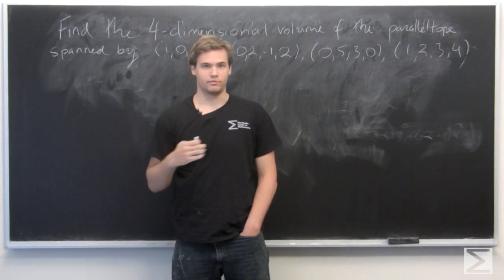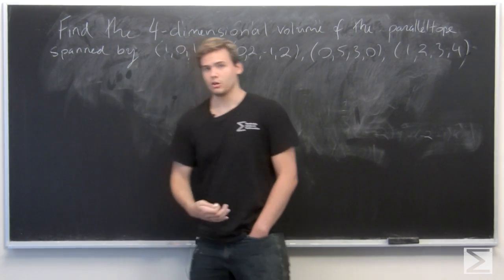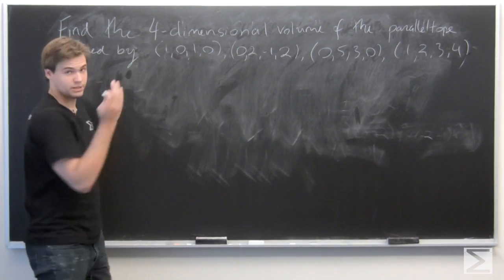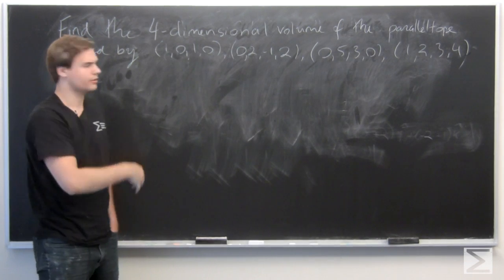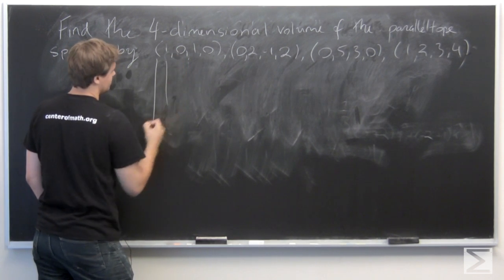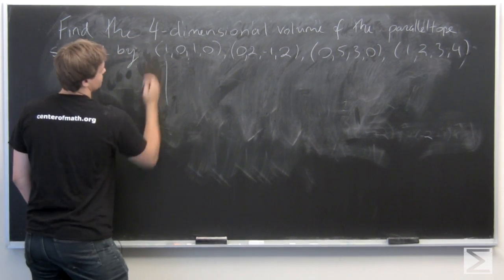Analogously with how we calculate the volume of a parallelepiped in R3 or a parallelogram in R2, we calculate the determinant of a certain kind of matrix. We get this matrix by stacking these vectors on top of each other. We'll take the absolute value at the end.